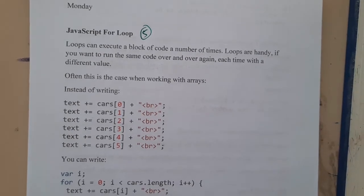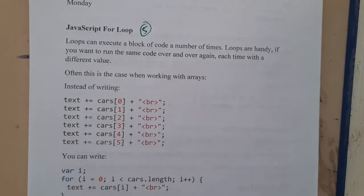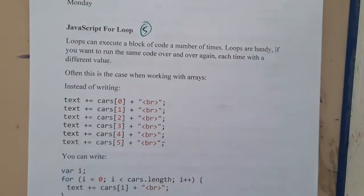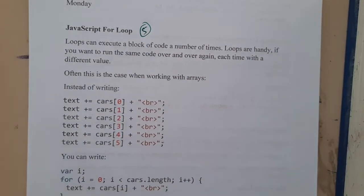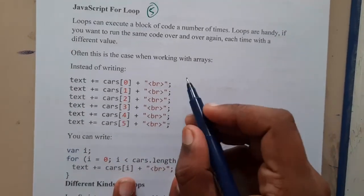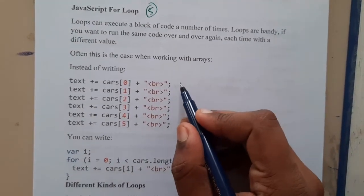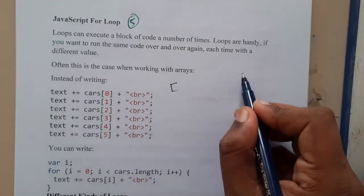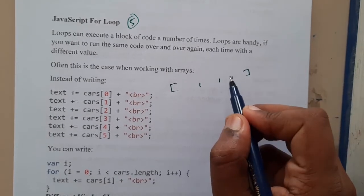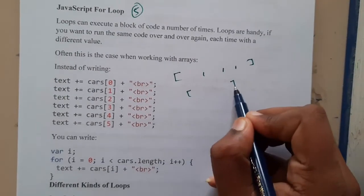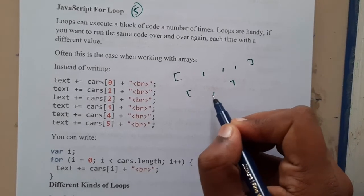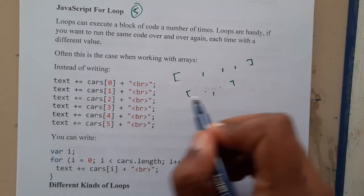Hello guys, we are back with our next lecture. In this lecture let us go through loops. Basically, what is the main intention or goal for loops? Assume that there is an array in which you are storing a thousand items, and there is one more array in which you are storing two items, and you want to print those items.